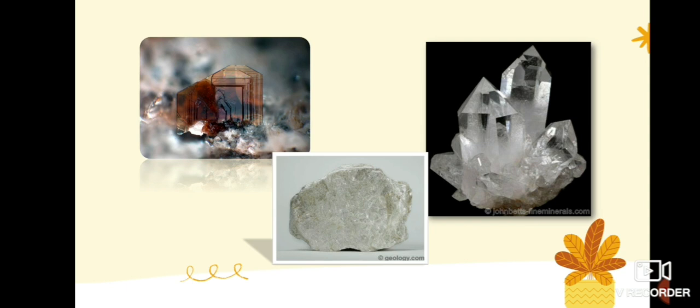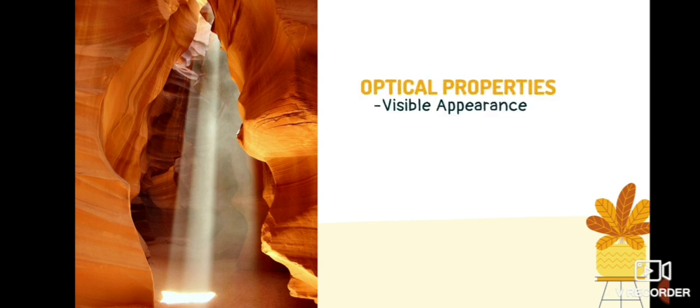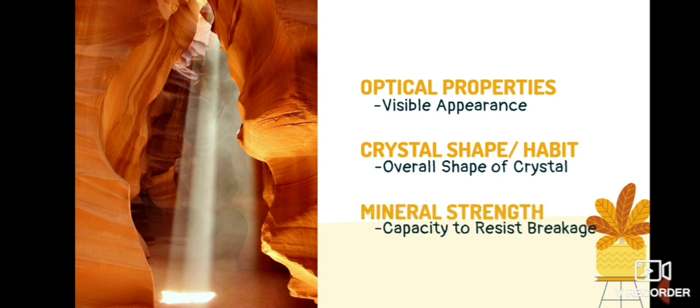Geologists often use these three properties in identifying and classifying minerals. The first one is the optical property, which includes a mineral's visible appearance. The second one is the crystal shape or the habit. This is the overall shape of the mineral. And the third one is the mineral strength, or the mineral's capacity to resist breakage or deformation.